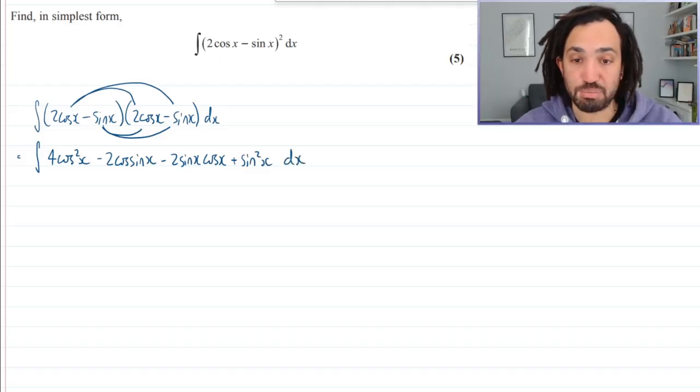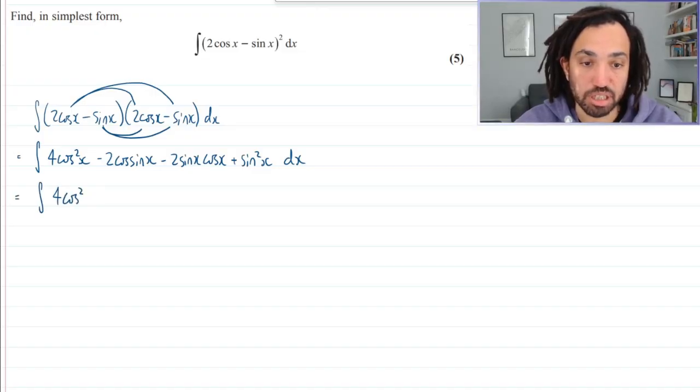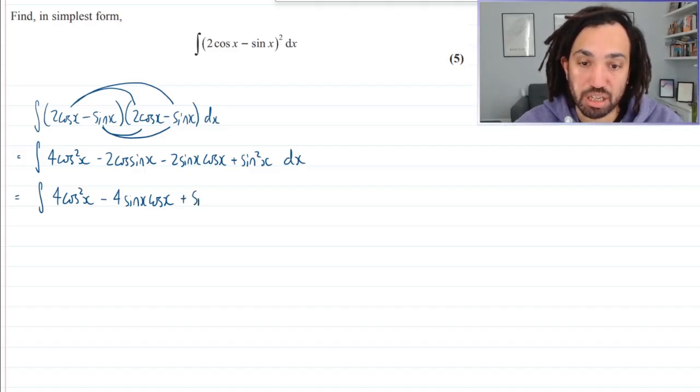Okay, right, we've just expanded that out and I've spotted these two things in the middle which look very double angle-y, if that's a word, which I know it's not. So this is minus 4 sin x cos x and we've got here a plus sin squared as well.